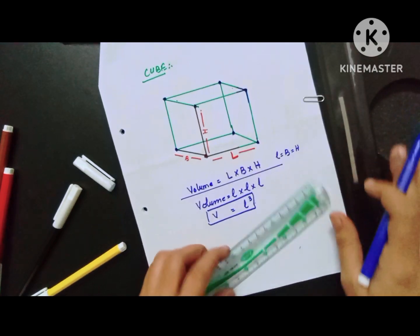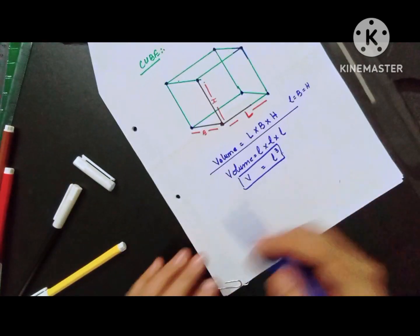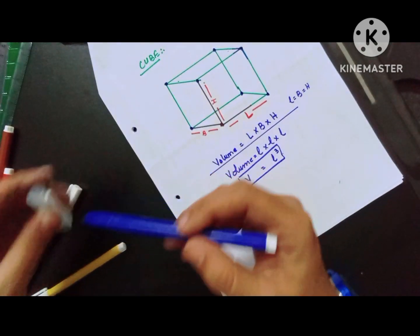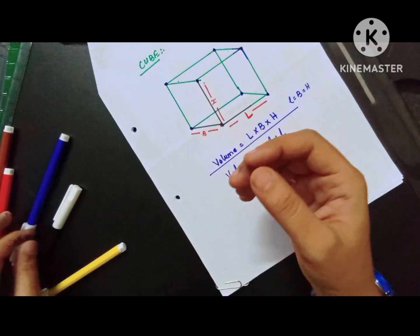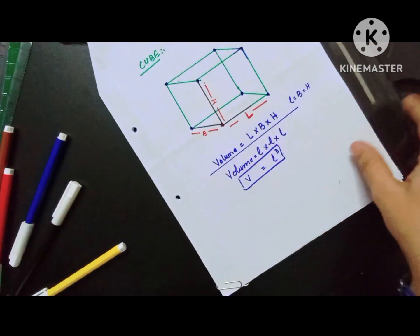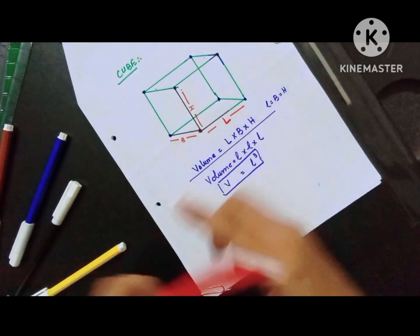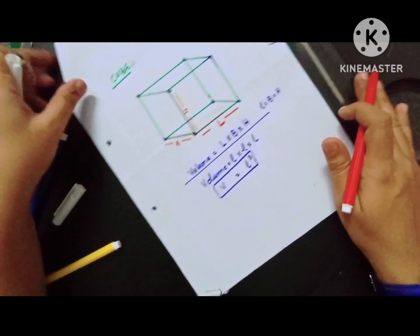Now let's talk about surface area of the cube. Surface area is about how many surfaces the figure has.